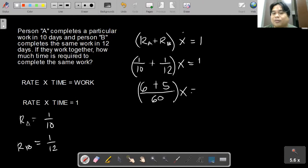Altogether, multiplying by X equals 1. 6 plus 5 is 11 over 60. X equals 1.